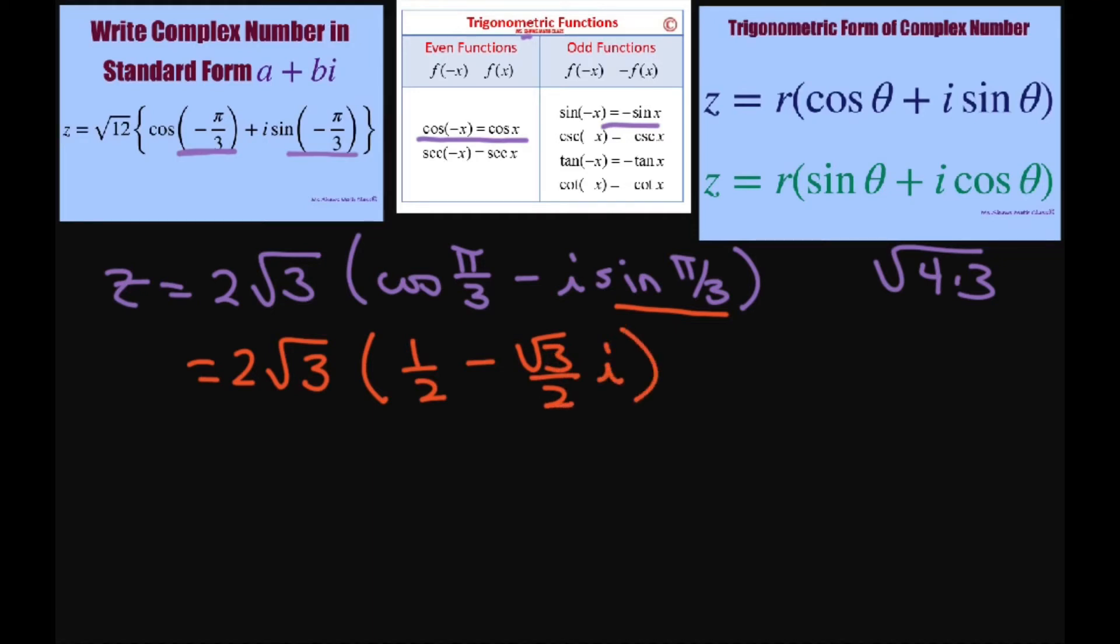Now what happens is these 2's are going to cancel out. So we're just going to distribute the square root of 3, and that gives you square root of 3 minus 3i. And that is your complex number in standard form.